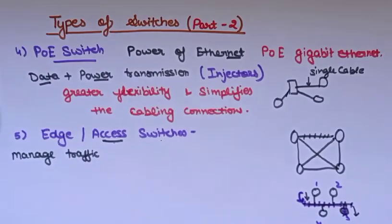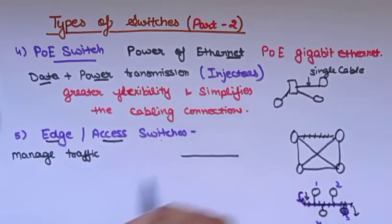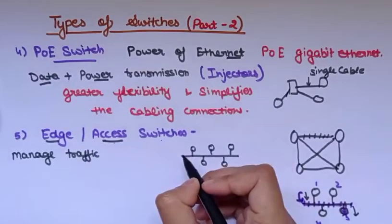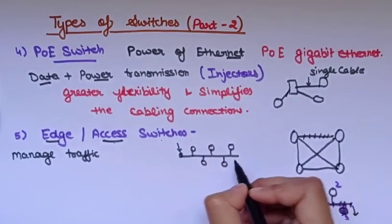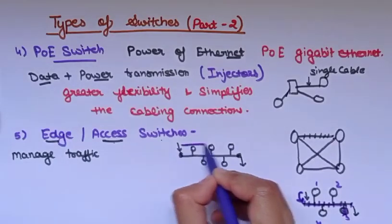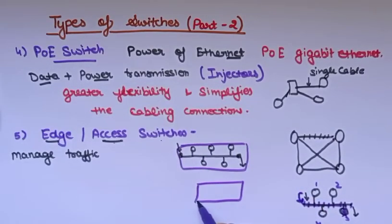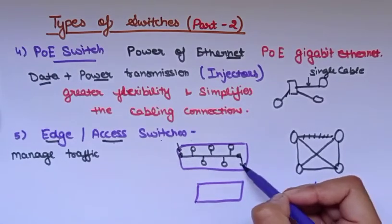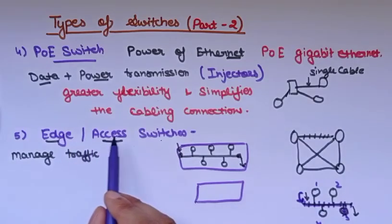Devices like computers and access points connect to edge switches. Edge means this is the end — the transmission media where multiple systems are connected. If there is one network and another network, the packets entering or exiting are handled by edge or access switches.